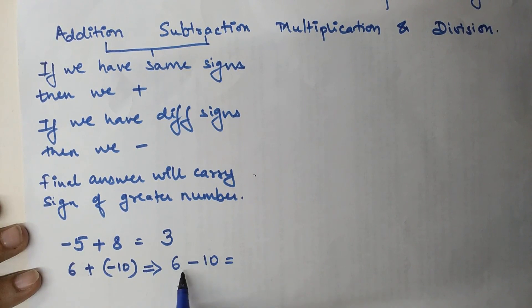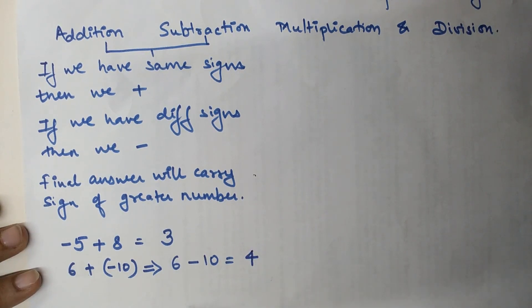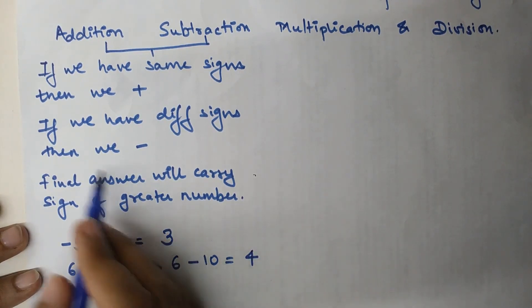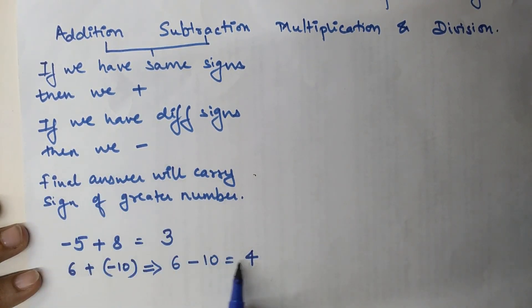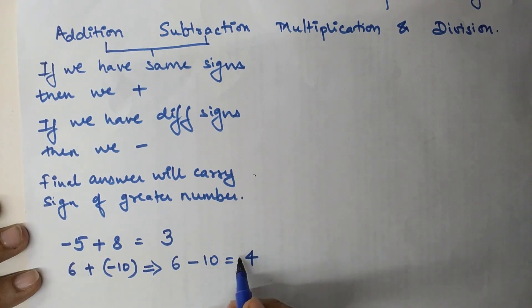Again we do subtraction. When you take 6 away from 10 you get 4, and the final answer carries the sign of the bigger number. The bigger number here is 10, whose sign is negative. So the final answer is negative 4.